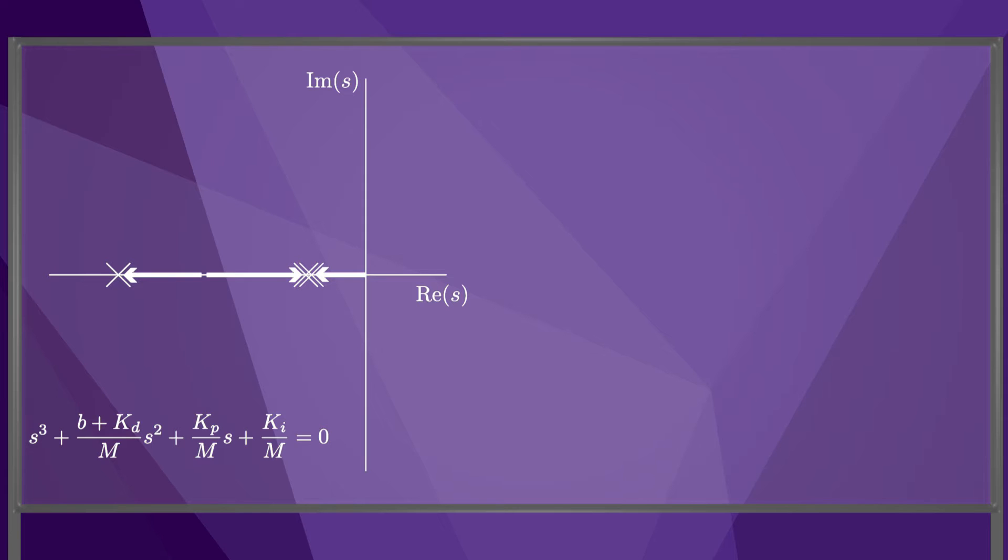If we continue to increase KI, the two co-located roots break away from the real axis and move into the right half plane when KI reaches its upper bound for stability. The error dynamics would be unstable for the roots shown.